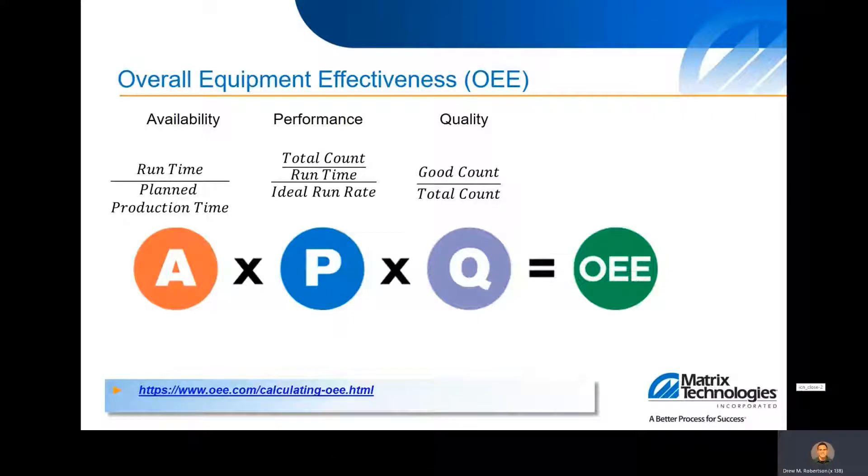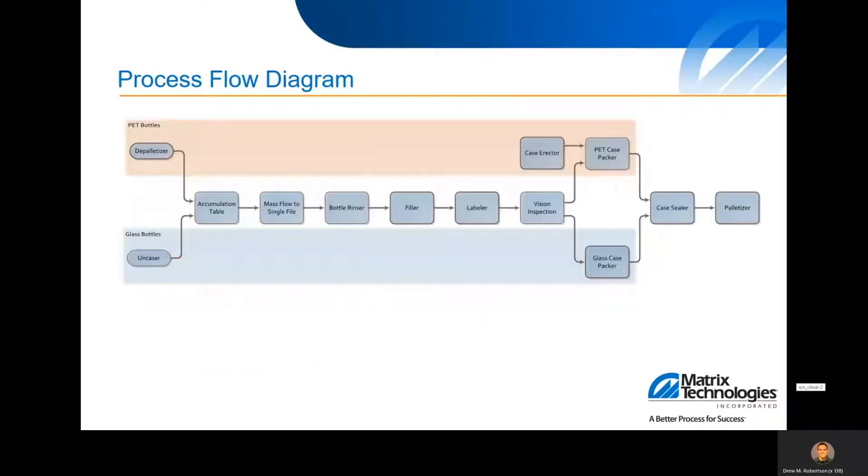It's taking into account equipment downtime to calculate the total case count over a certain time period. We also take into account a quality factor to help get it to that OEE number, and that factor also takes into account some of the availability numbers.